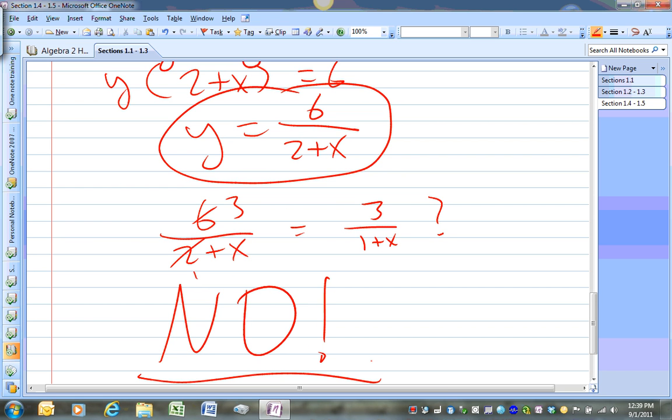If you do that, you're actually disobeying the order of operations. That's a huge fundamental error. So this cannot be done. Do not cross off the 6 and 2 like I just did. That's very, very bad form. We'll talk about this in class on Friday.